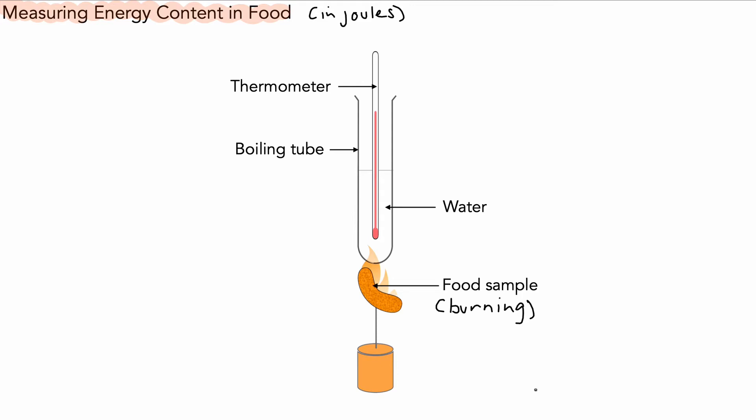The method we use in this experiment is that we burn the food sample, we use that heat energy to heat the water, and then we measure the temperature rise of the water. Once we've got that information, we need to use an equation.